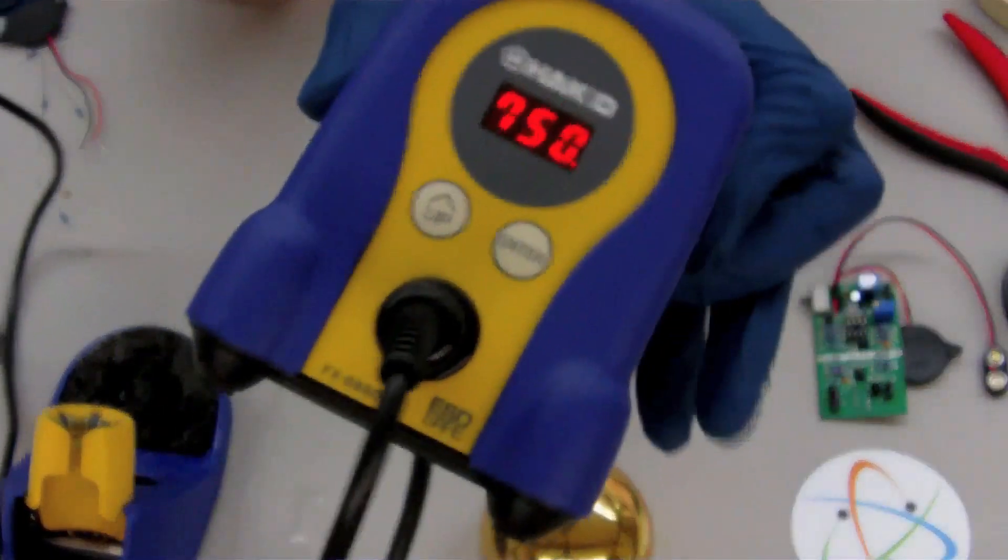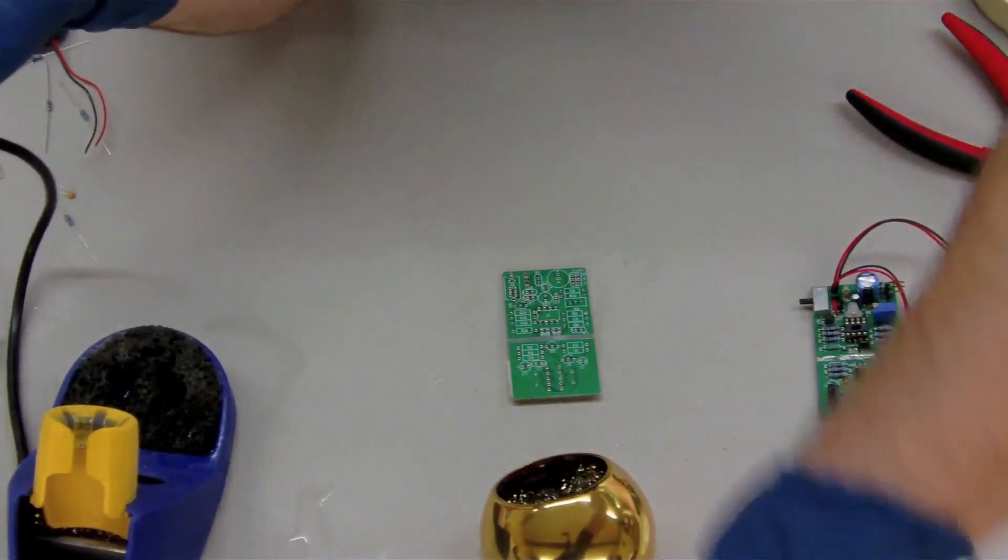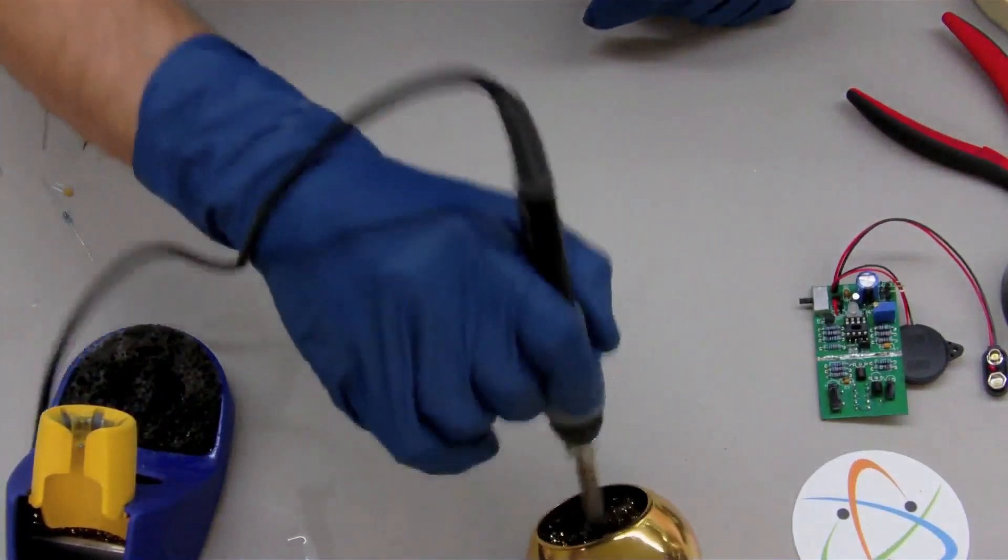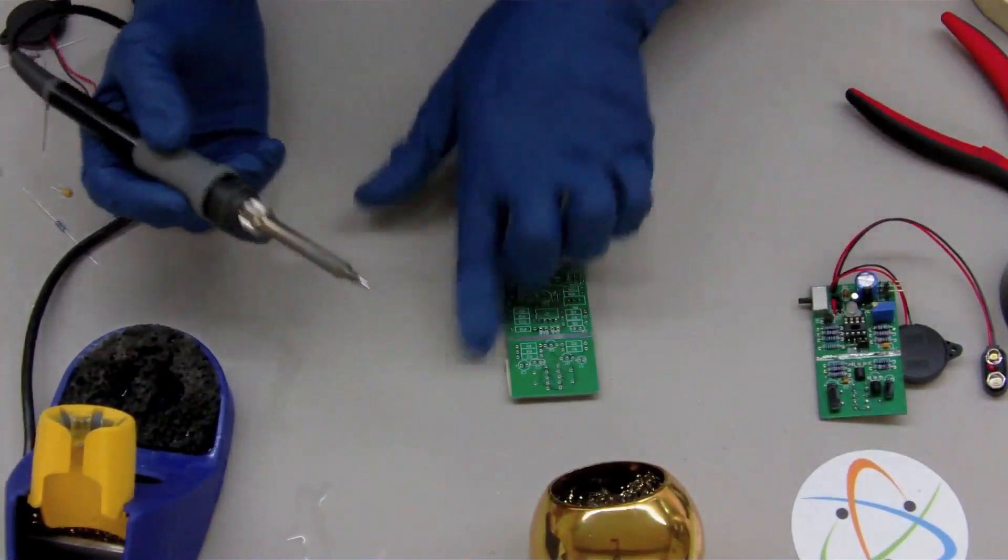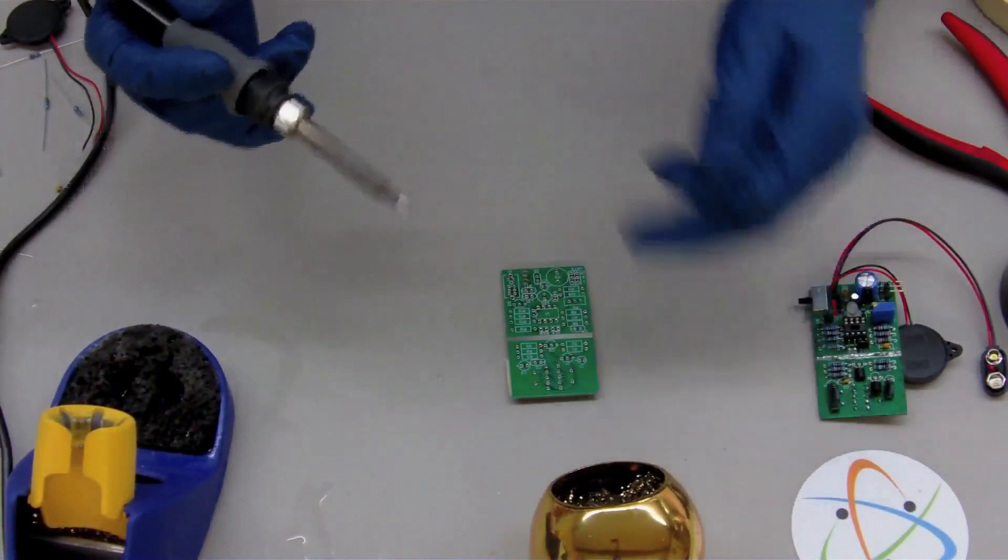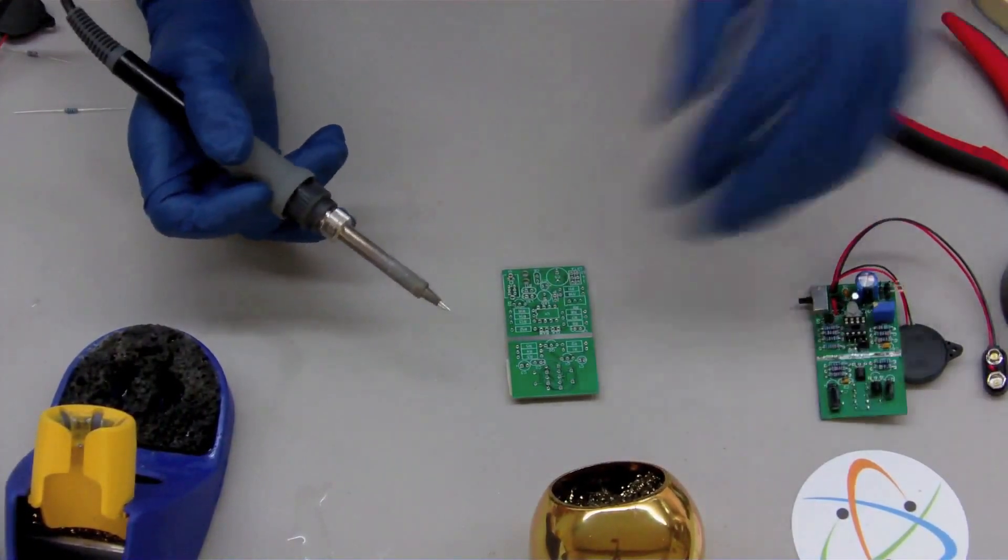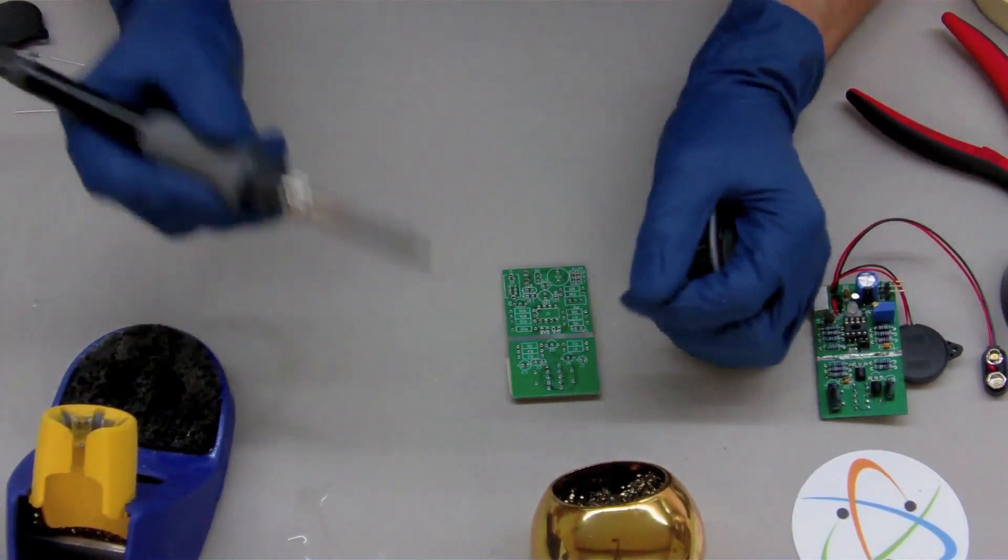I run this particular iron at 750 degrees Fahrenheit, pretty hot, so you do have to be careful if you run it that hot because it's possible to pull a pad off. But the benefit is that the soldering is fast. So now, how to actually solder.